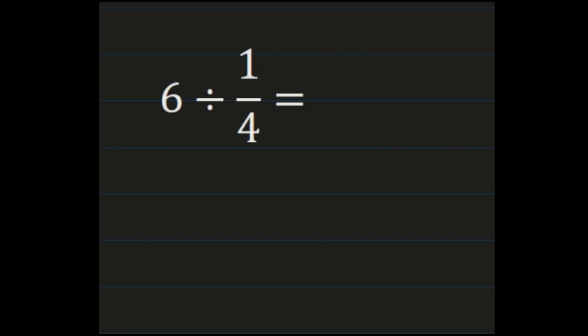For our first example, we have a whole number divided by a unit fraction: six divided by one-fourth. Your first step is with the six, the whole number — you have to turn it into a fraction. To turn a whole number into a fraction, we put it over one. Then our division steps: that first fraction, whether it was a fraction or a whole number that we turned into a fraction, stays exactly the same. So six over one is going to remain six over one.